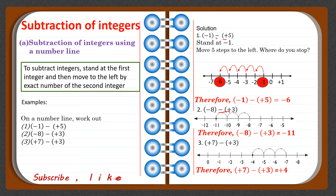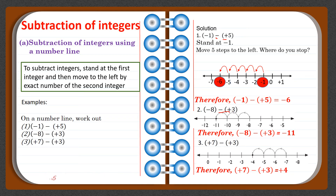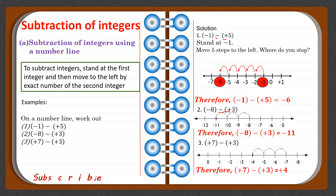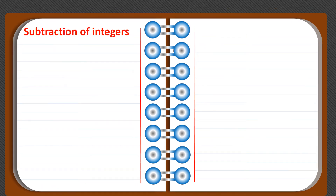So generally, when subtracting integers using a number line, you stand at the first integer and move the number of steps depending on the quantity of the second integer. Remember: as shown, when minus is followed by plus, the sign becomes minus. Let's now subtract without using a number line.